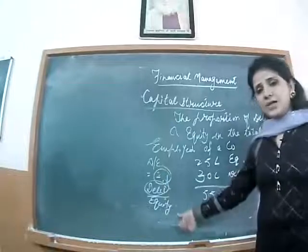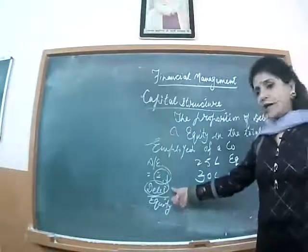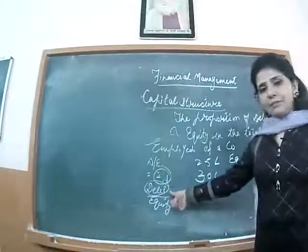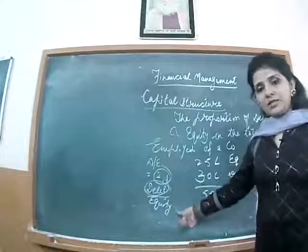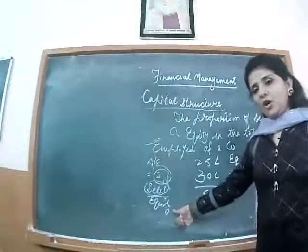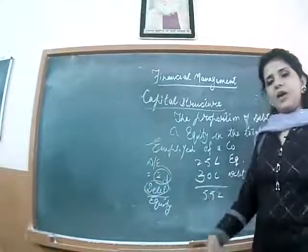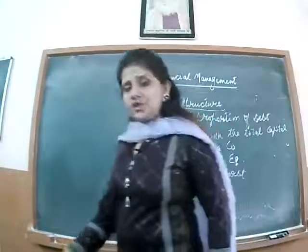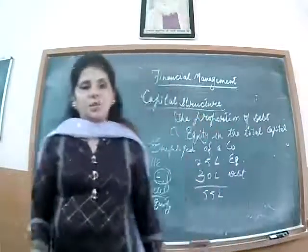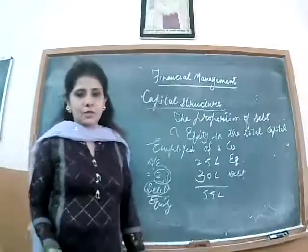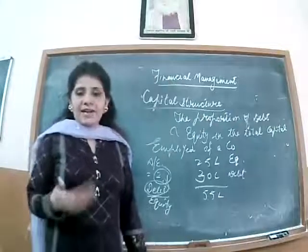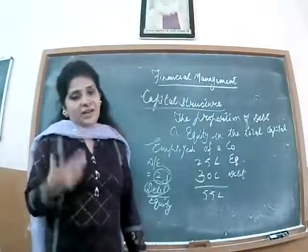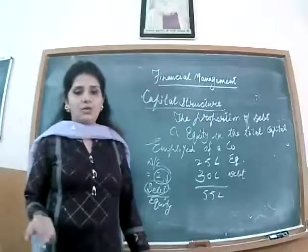If you go to the first formula on page 250 of the book, there is a formula about debt-over-equity. Debt means borrowed funds — long-term. Equity means owners' funds, which includes equity share capital, preferential capital, reserve and surplus. So like that way, the book is relating capital structure with numericals also.